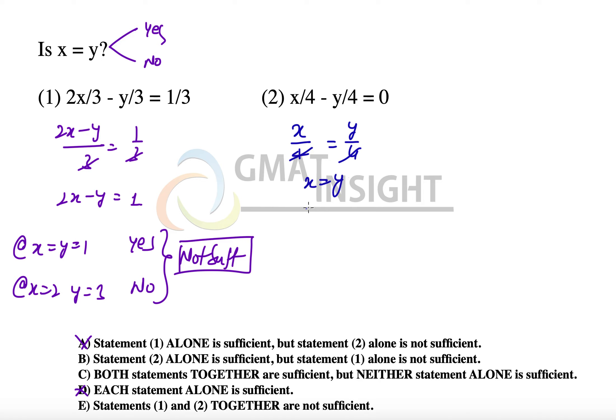So we have x equal to y. We have a definite answer as yes to the question, and hence the second statement alone is sufficient. So the final answer to the question becomes option B. Thank you so much.